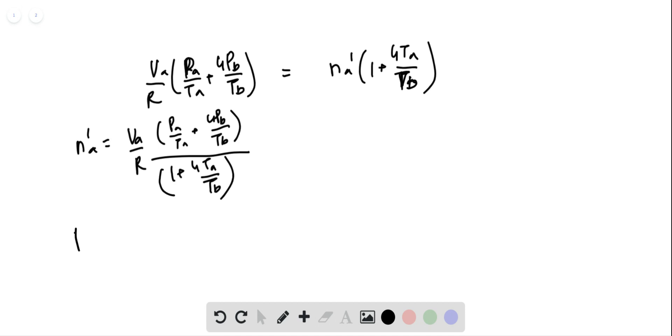Now, we will substitute this into finding the thing that we are supposed to find which is the pressure. We will find PA dash. Remember that PA dash equals PB dash, so we can just find PA dash.